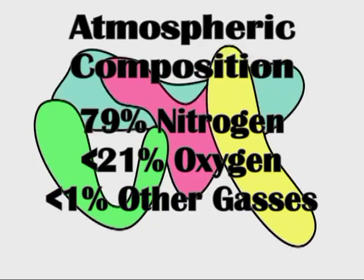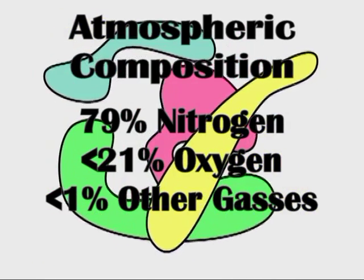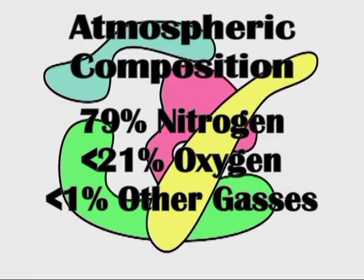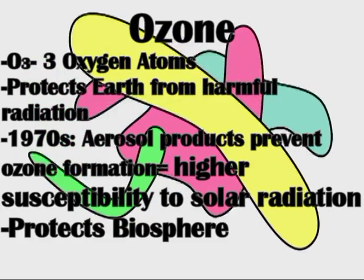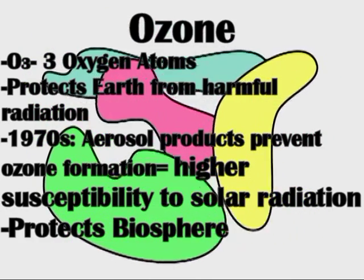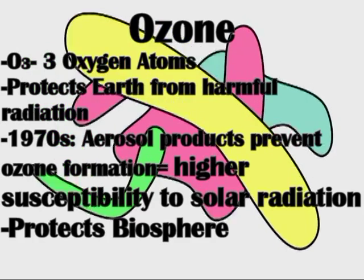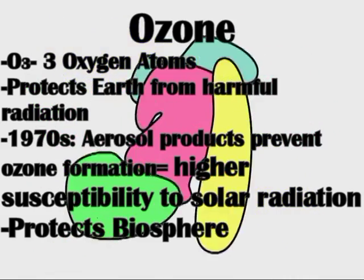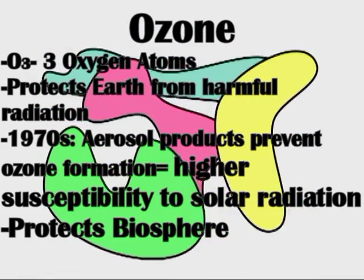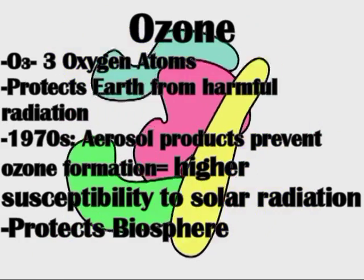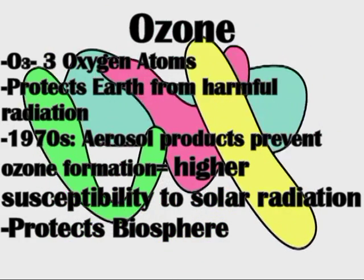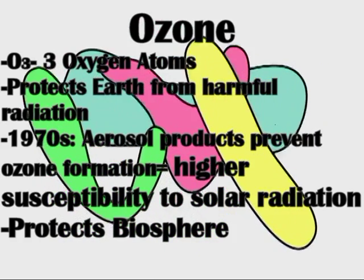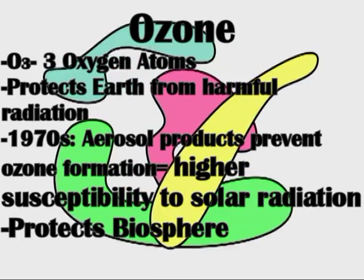The composition of the atmosphere is 79% nitrogen, less than 21% oxygen, and less than 1% of other gases. The ozone, chemical symbol O3, protects the biosphere from harmful radiation from the sun, such as gamma rays, X-rays, and UV rays. In the 1970s, aerosols put into the air would deplete the ozone by changing the chemical bonds in which the ozone would form, which contributed to global warming. It's important that we protect our ozone, because otherwise we would die from radiation from the sun.